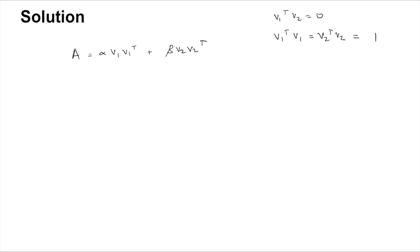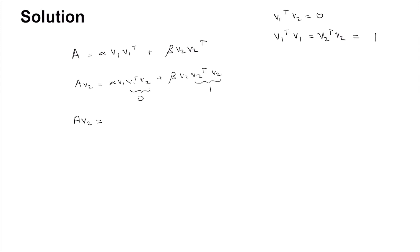Let's try to isolate alpha and beta. First, we post-multiply both sides by v2. The idea is that v1ᵀv2 will be zero, killing the alpha term, so we isolate beta. We get: A·v2 = alpha·v1·(v1ᵀv2) + beta·v2·(v2ᵀv2). Since v1ᵀv2 = 0 and v2ᵀv2 = 1, this gives A·v2 = beta·v2. So beta is an eigenvalue of A, because v2 is non-zero.